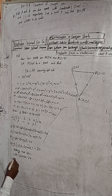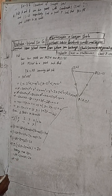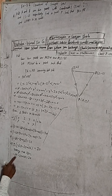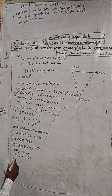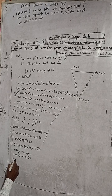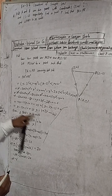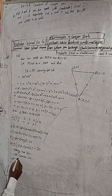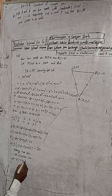We take minus 6x minus 6x. So x is equal to 1 plus 3y, with 1 plus 3y and minus 2y.